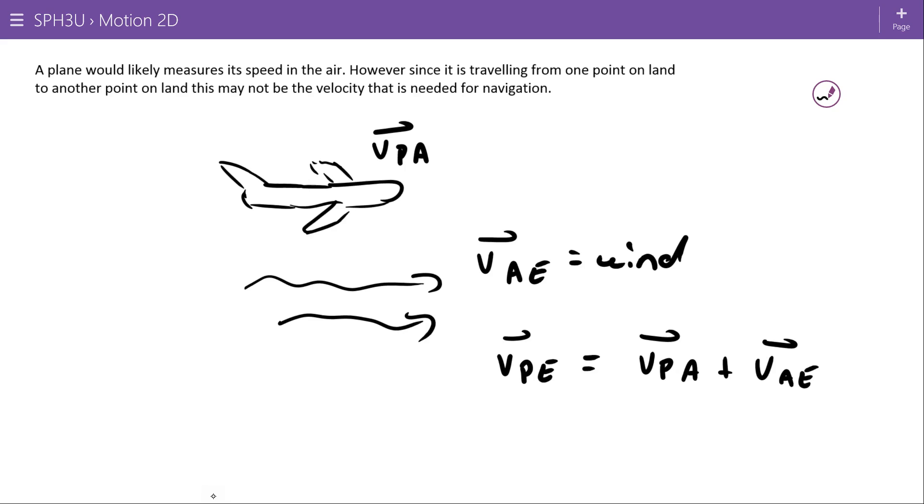And so it used to be important for pilots to consider how far, or what their speed is relative to the wind and then take the wind into account to make sure that they're navigating in the right direction. Now we kind of know that this is all simplified by GPS and this isn't as important as it used to be, but obviously it's still an illustration of the point.